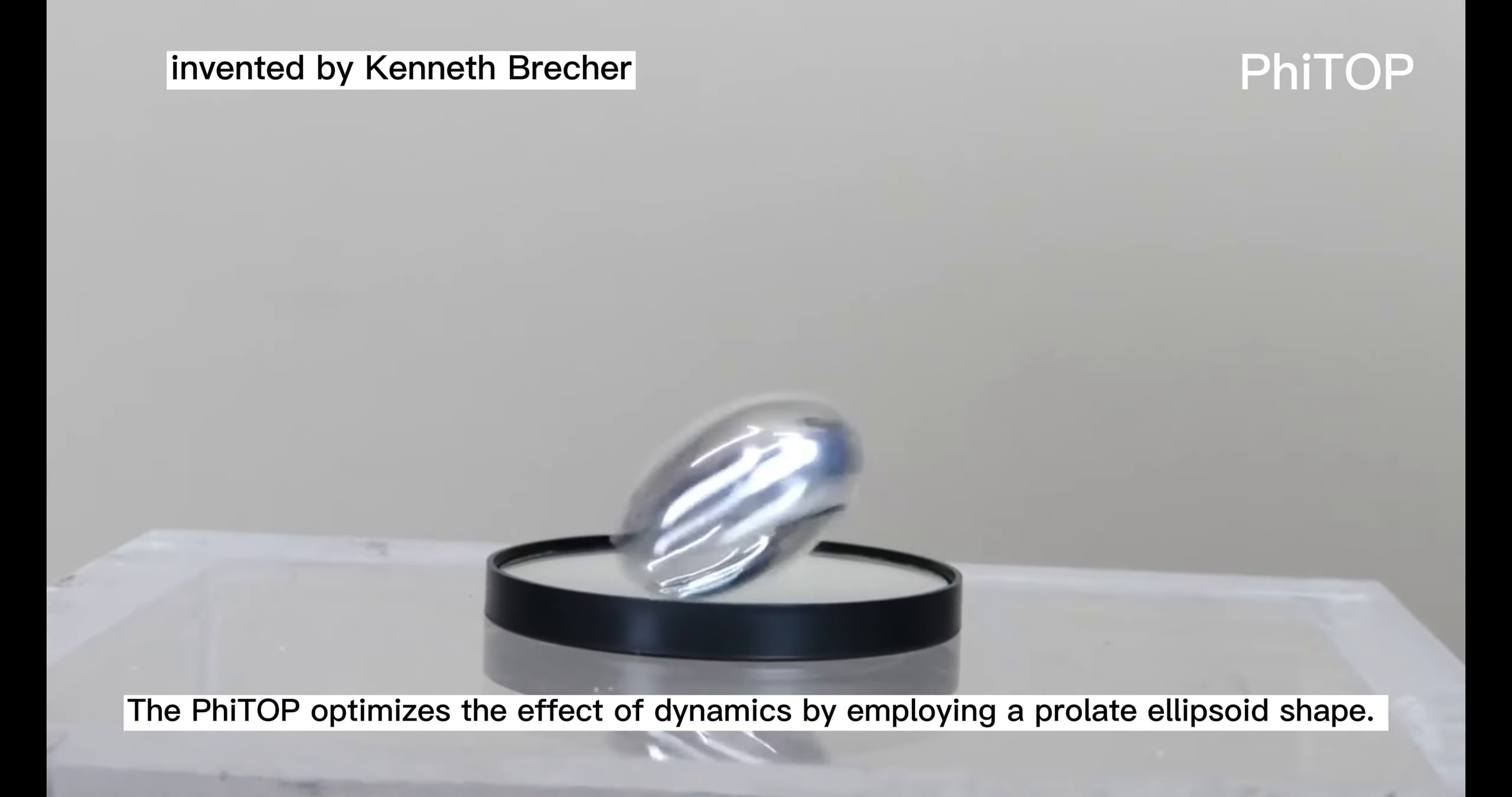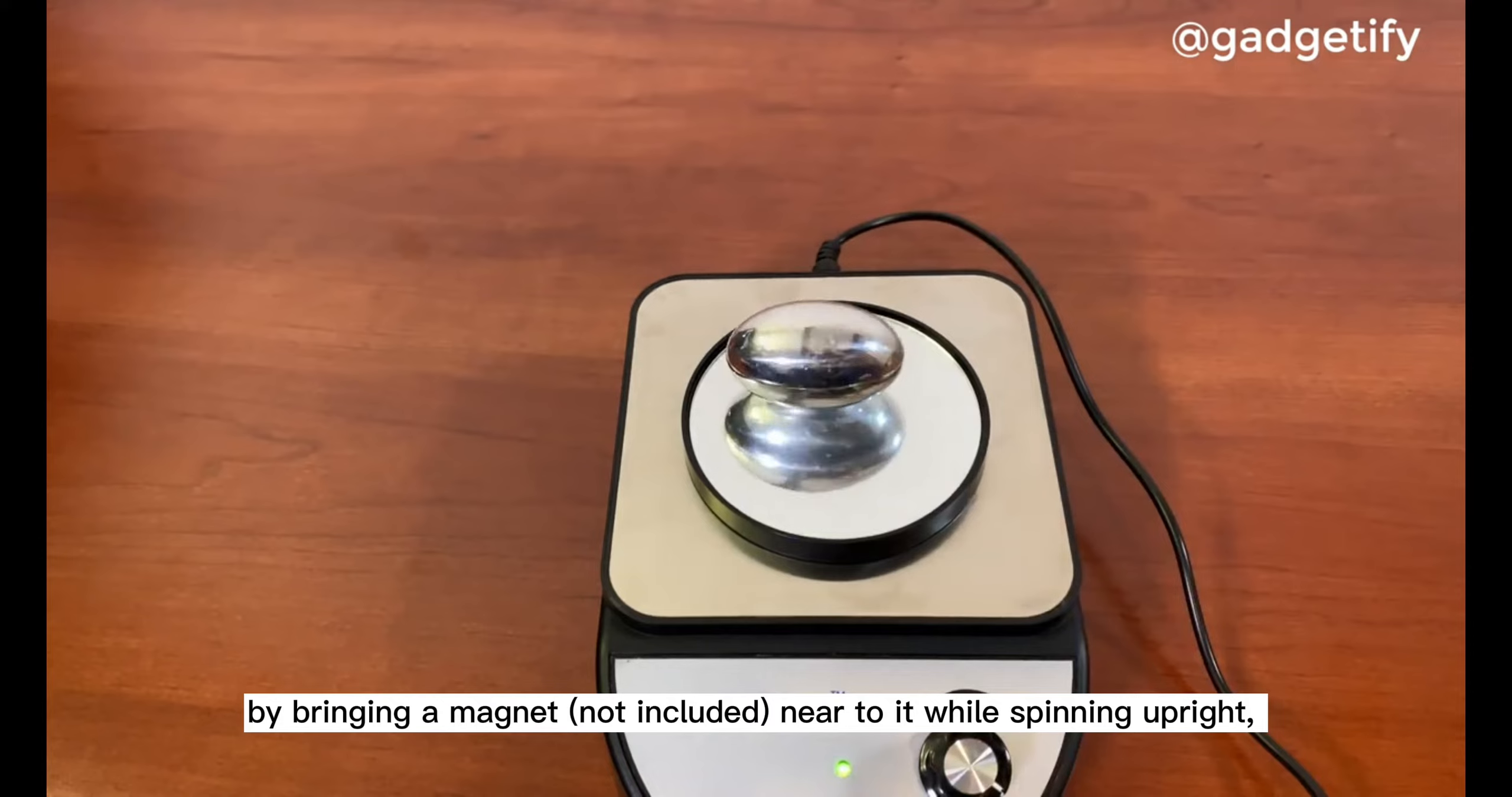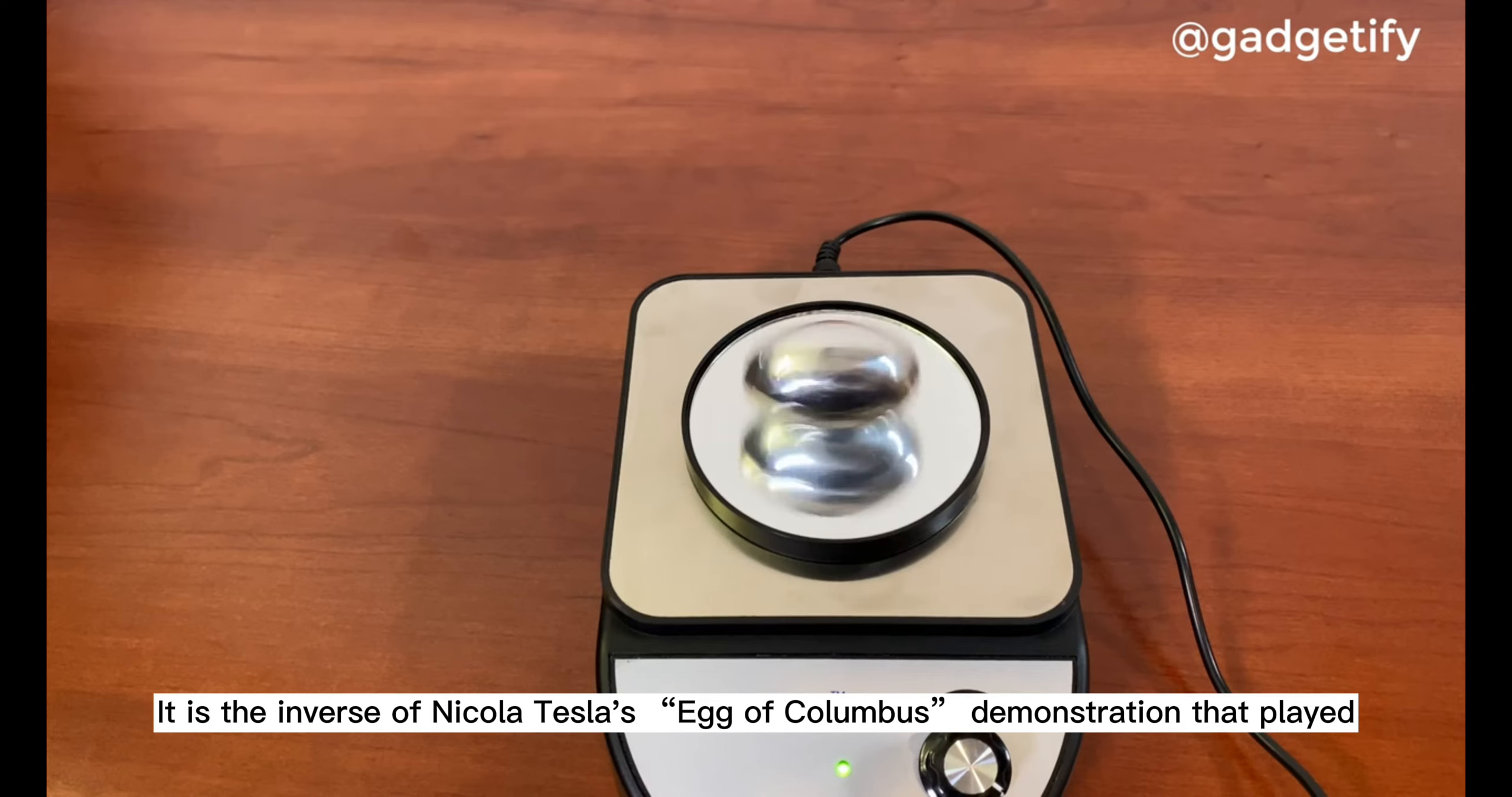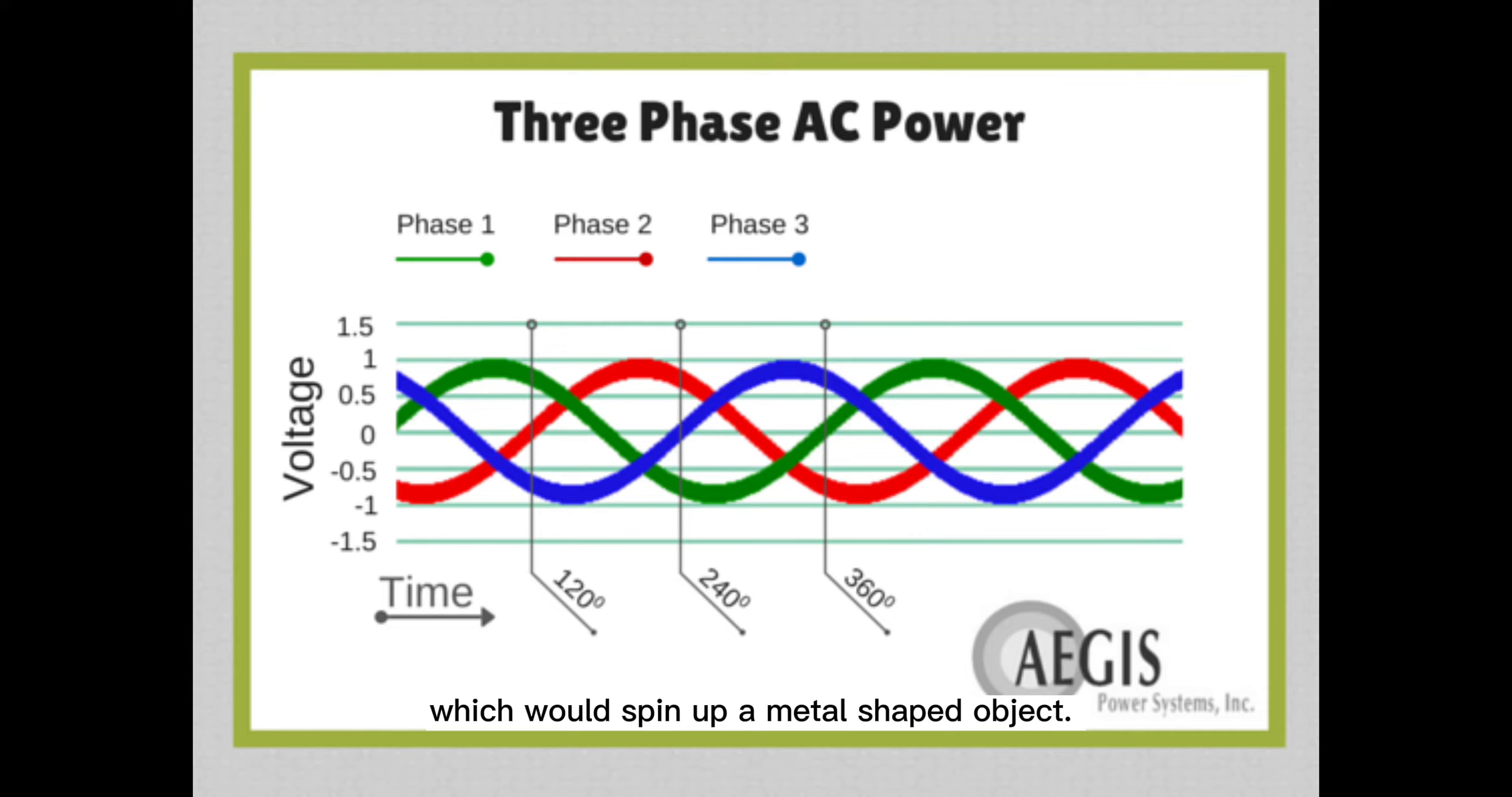The phytop optimizes the effect of gyro-dynamics by employing a prolate ellipsoid shell. Although the phytop is made of solid non-magnetic aluminum, by bringing a magnet near to it while spinning upright, the phytop will fall down. This is a nice example of Lenz's law. It is the inverse of Nikola Tesla's Egg of Columbus demonstration that played an important role in the triumph of AC over DC at the end of the 19th century. That demonstration used three-phase AC currents to produce a time-varying magnetic field which would spin up a metal egg-shaped object.